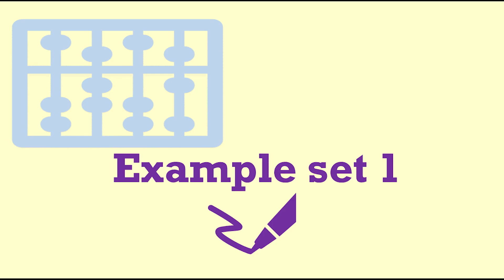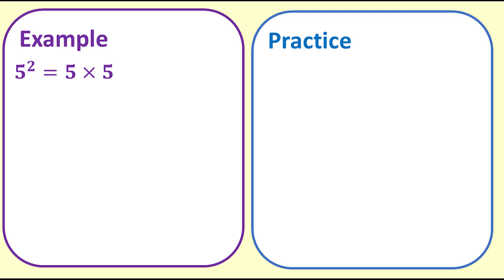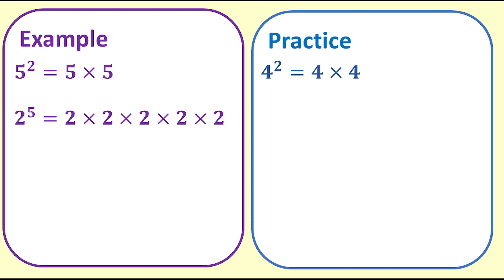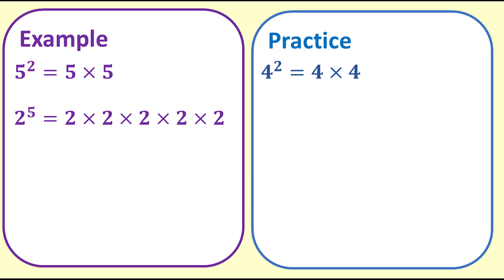Example set 1: Expanding and simplifying numbers with exponents. 5 to the power of 2, also known as 5 squared, equals 5 times 5. Your turn: 4 to the power of 2. If the video is going too fast you might like to slow it down or pause. 2 to the power of 5 is 2 times 2 times 2 times 2 times 2 — in other words, 2 multiplied 5 times.